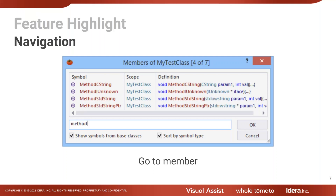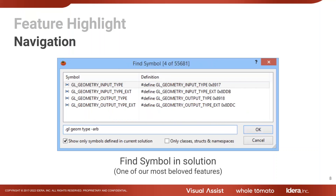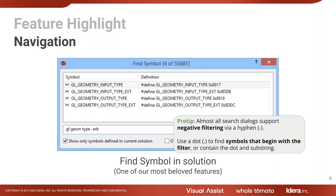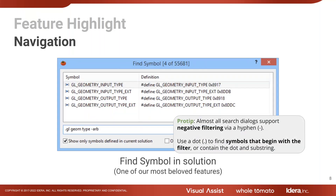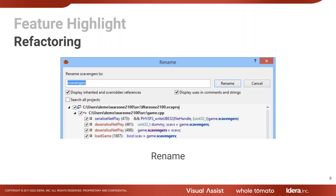GoToMember is a searchable window — a searchable list of symbols. It's very simple but very powerful. Almost all search dialogs support negative filtering, including search dialogs inside the IDE and our tool windows. For example, typing negative 'ARB' will filter out any text that contains 'ARB' — a good way to exclude results you don't want to see.